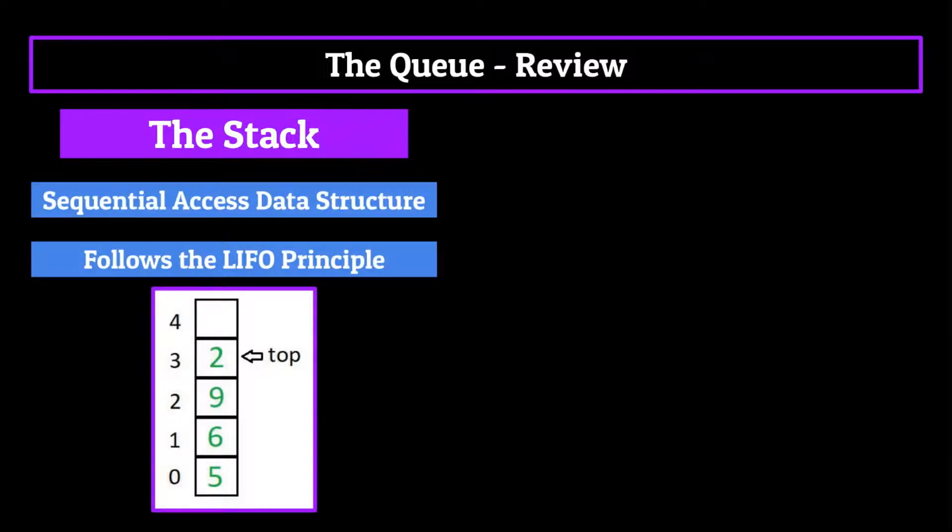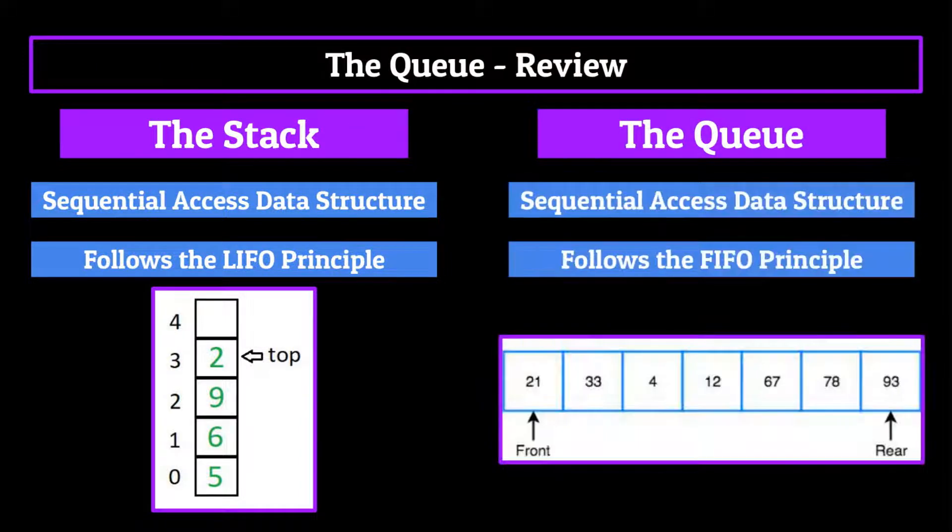Alright, so now that we've talked about the stack, a sequential access data structure which follows the LIFO principle, we need to cover the opposite, which in computer science we call a queue. A queue is a sequential access data structure which follows the FIFO principle, which we'll be covering later. The stack and queue are very much a dynamic duo when it comes to the world of computer science, so you'll notice a lot of similarities between the two in the way they're structured and how they work.